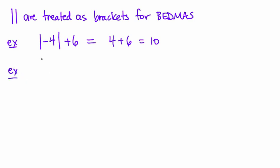If I have absolute value of negative 4 plus 6, well, BEDMAS says do inside the brackets first, so this is the absolute value of 2, then take the absolute value and you get 2.